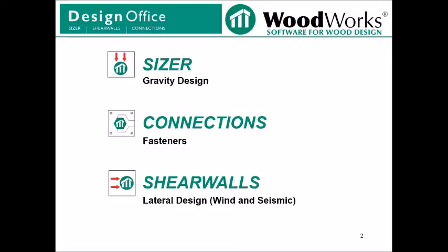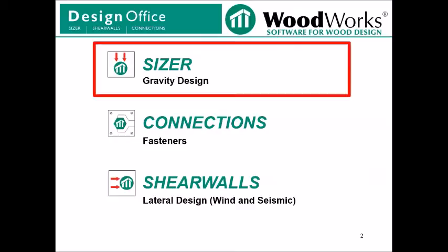Sizer can be utilized to complete gravity load design. Connections can be utilized to complete the design of typical fasteners included in the NDS. And Shear Walls is a lateral load design tool that can be utilized to complete the design of light frame wood structures up to 6 stories in height. This video will only touch on significant changes which have occurred to the Sizer program since the previous version.